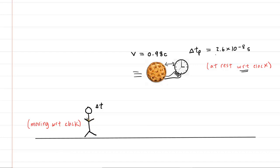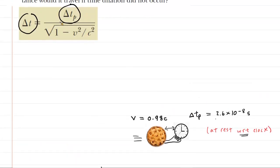So when we have identified the object that is moving with respect to the clock, we label that time interval delta t. And when we've identified the object that is at rest with respect to the clock, we label that time interval delta tp. So it's very important to get those two times straight. But once we've done so, we can apply the time dilation equation.